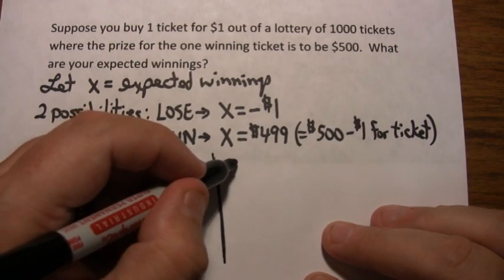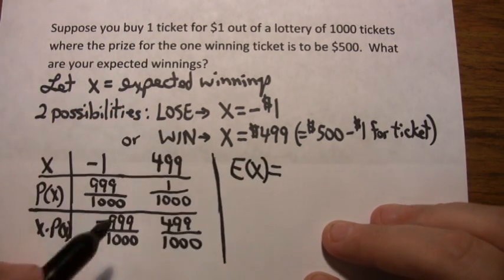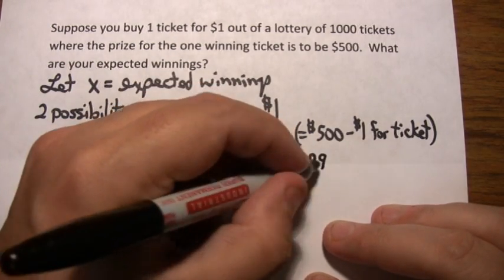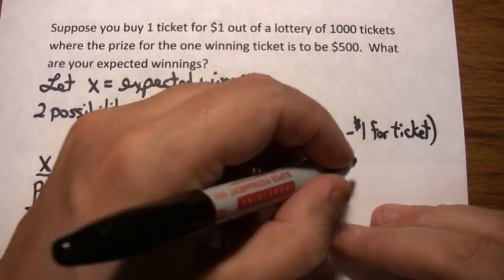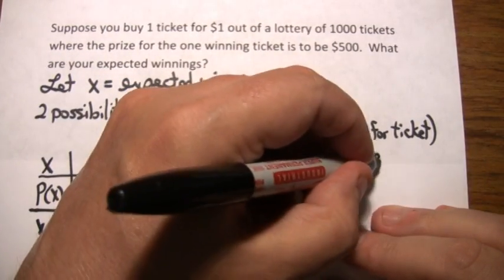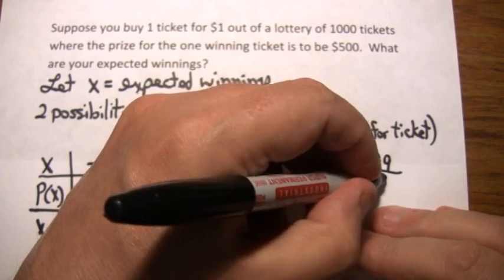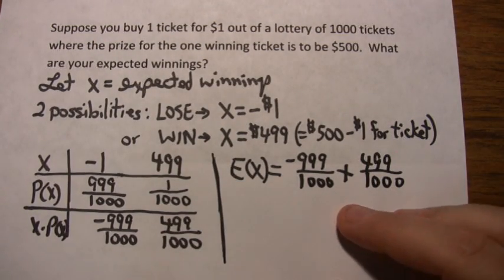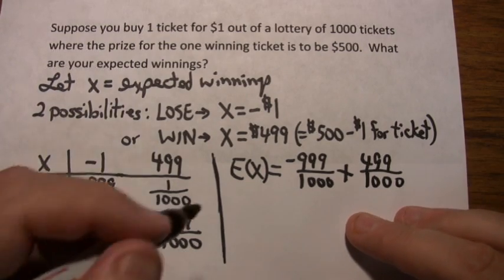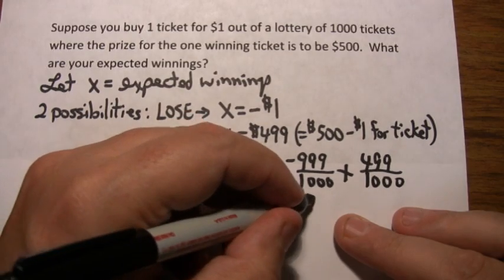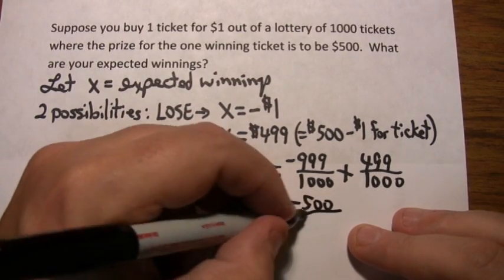And by definition, the expected value of X is the sum of these two numbers. So it's negative 999 out of 1,000 plus this one, 499 out of 1,000. They have a common denominator of 1,000. So if you take negative 999 and add positive 499, you end up with an expected value of negative 500 out of 1,000.